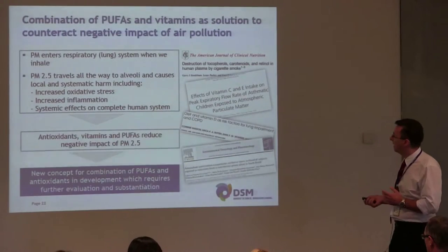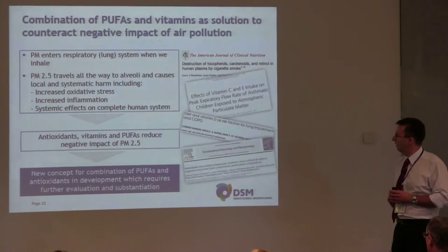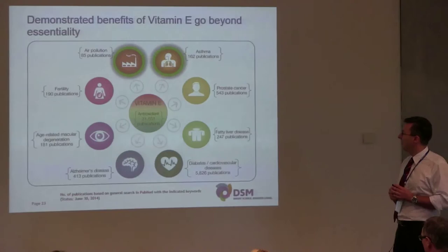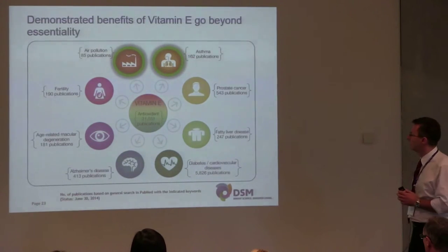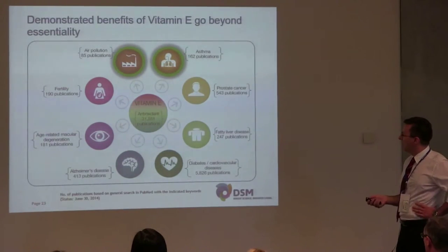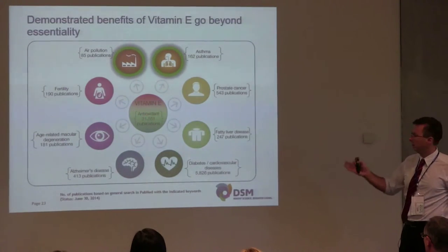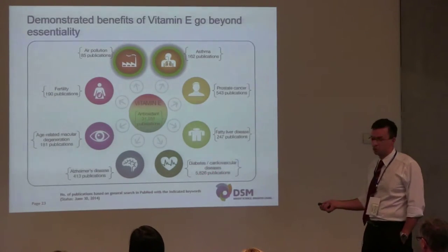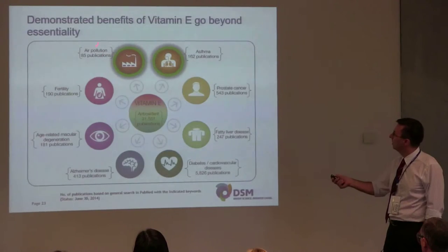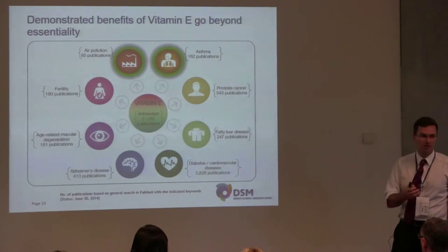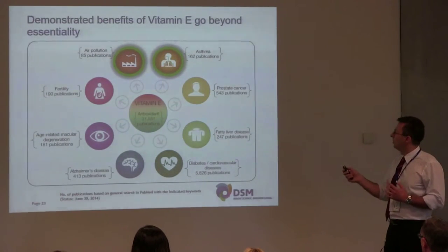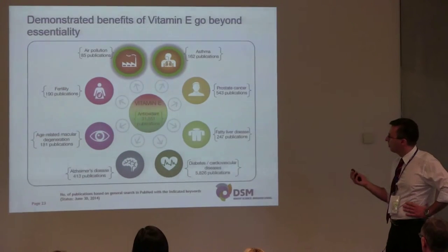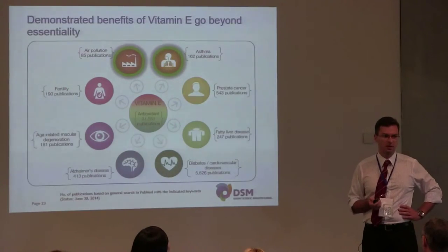To sum up, our intention is to counteract the detrimental effects of air pollution by combining antioxidants and polyunsaturated fatty acids to reduce the negative impact of particulate matter. On my last slide, I did a basic search in PubMed on vitamin E and antioxidant function — a very established field with more than 30,000 publications. But also prostate cancer, fatty liver disease, diabetes, cardiovascular disease, Alzheimer's — all show enormous numbers of publications. Air pollution and asthma are also topics where researchers worldwide are engaged, and we would like to provide solutions for the benefits of vitamin E which go beyond essentiality.